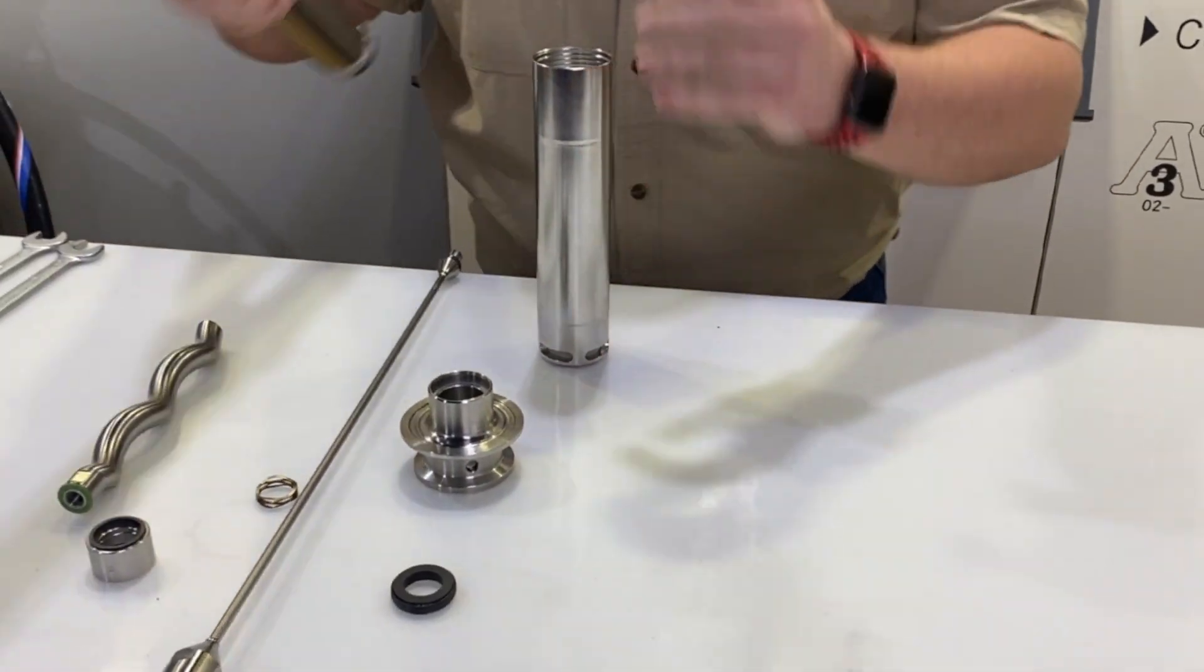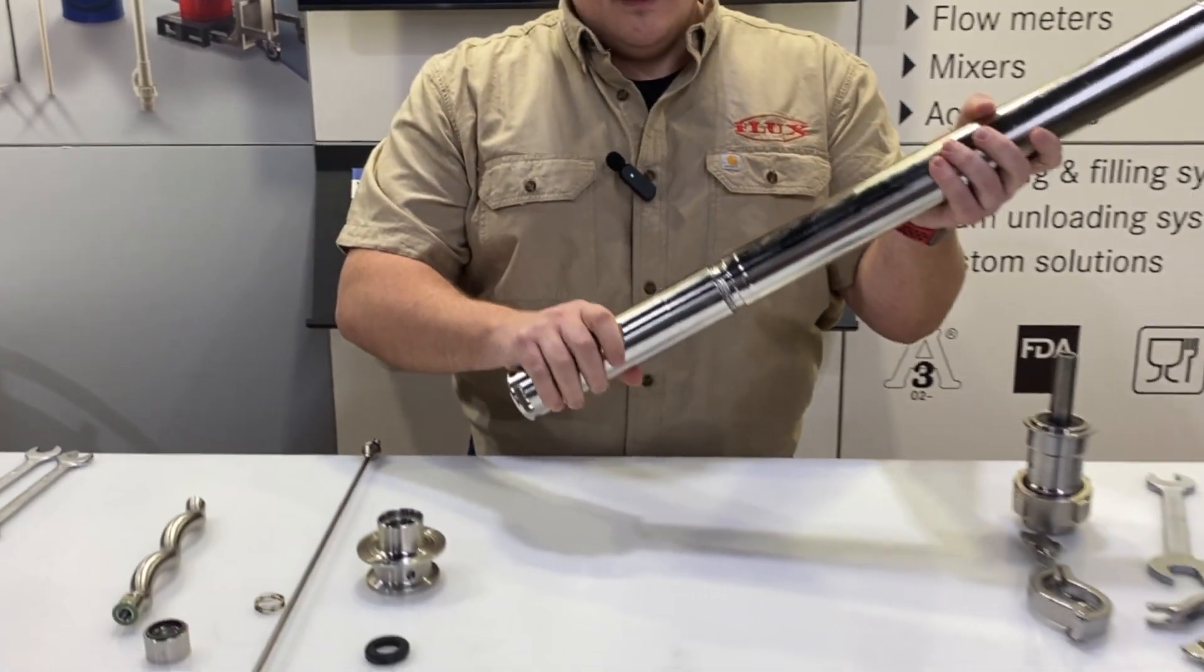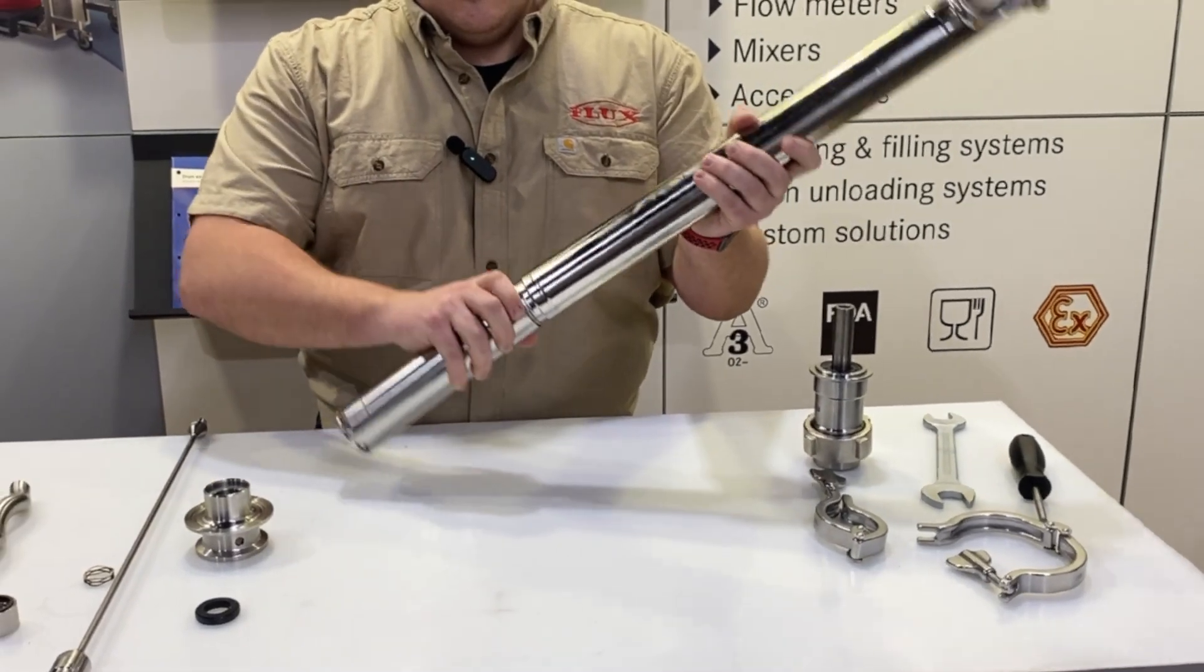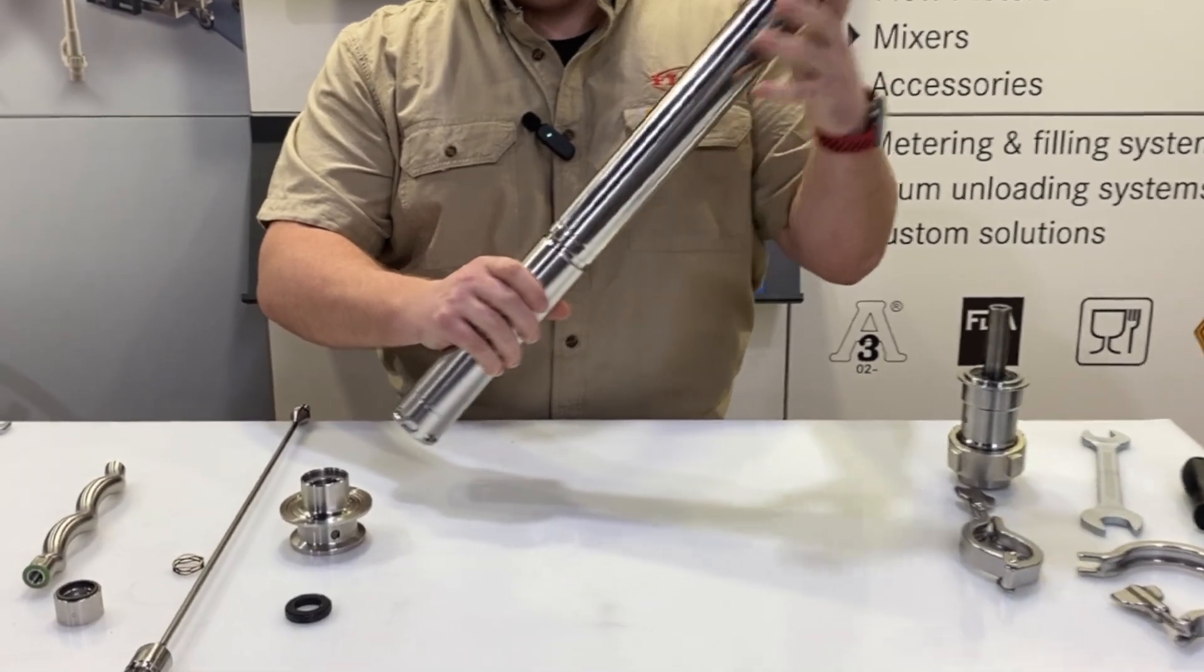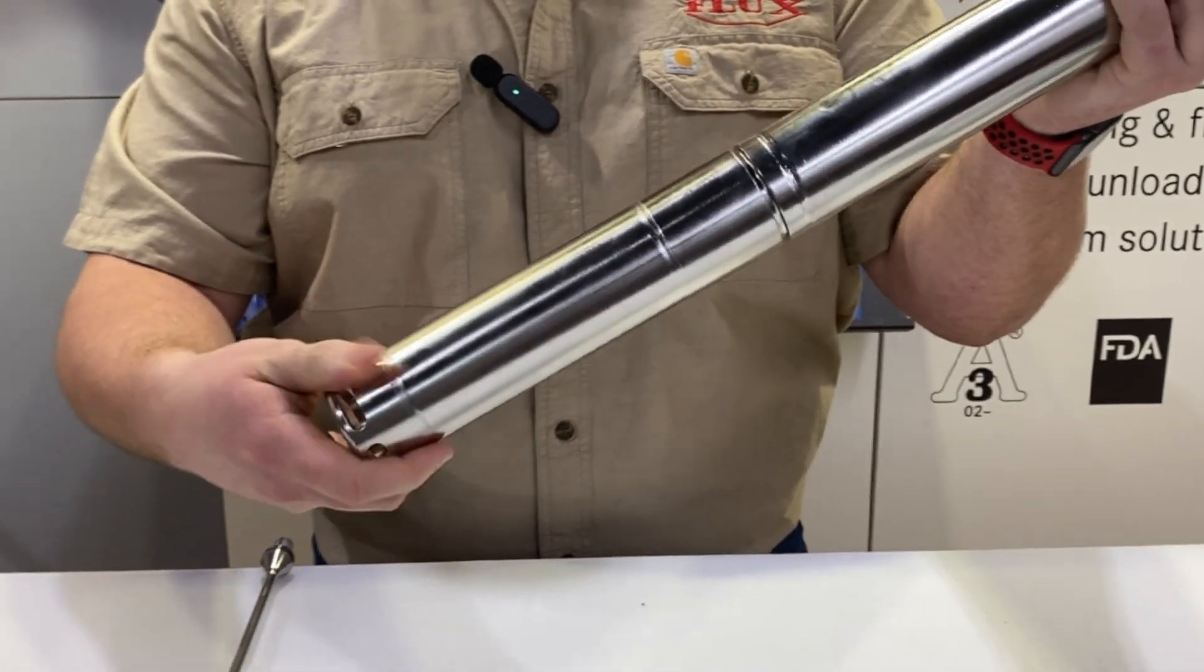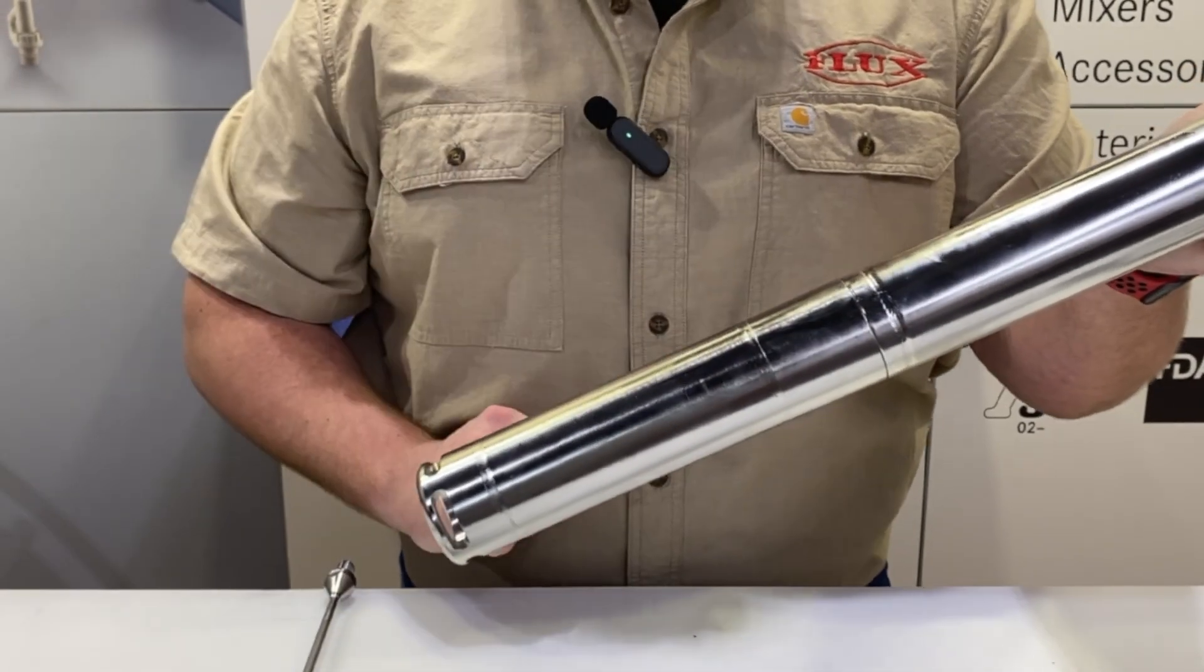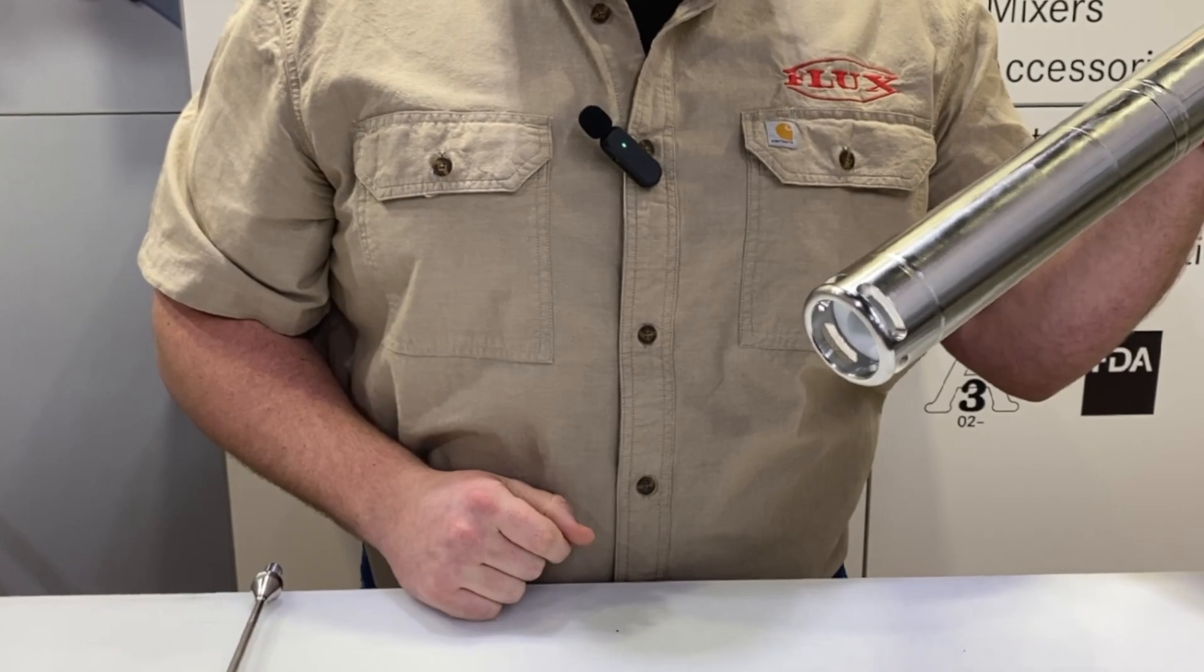Then you can take your pump tube, again reverse thread, and thread that on. Holding it vertically will keep the stator in place. You can thread that all the way up until it's flush. If it stops anywhere other than right on the pump tube, you know that you have an alignment issue. Just check that the pin is still in the correct position.